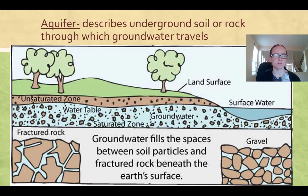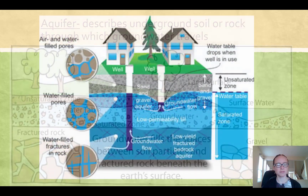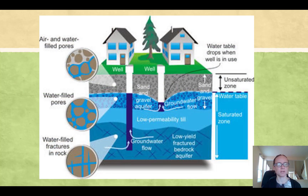An aquifer describes an underground soil or rock through which groundwater travels. Here's a picture of aquifers and wells — domestic wells at households. Sometimes houses have individual wells; in the Central Valley we have large municipal wells that pump out water and distribute it among houses. This is how they sink the well into the ground and extract the groundwater. Even though the groundwater is not in rivers, it still can have a flow into the pump.